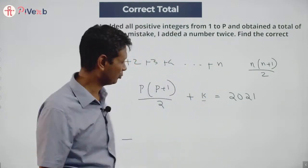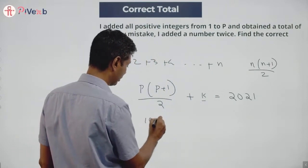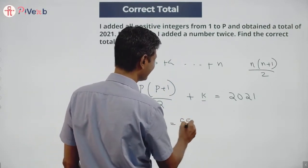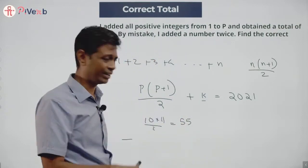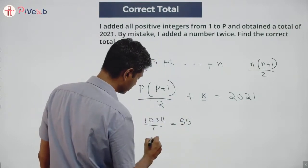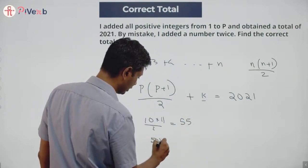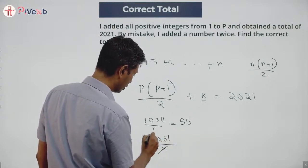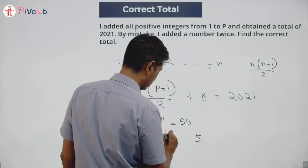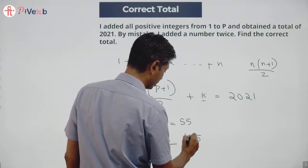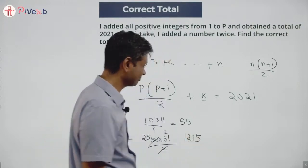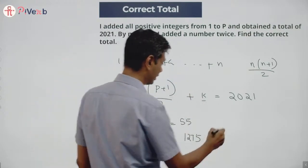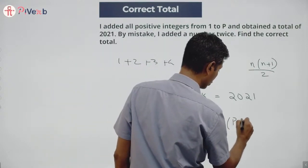Let me do 10 into 11 by 2. This is 55, minuscule. Okay, this is not the answer. Let me do 50 into 51 by 2, which is 51 into 25. 1275. That's not it. I have to go to 2021. Break it differently.